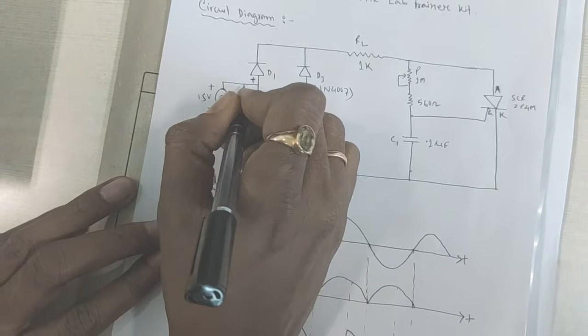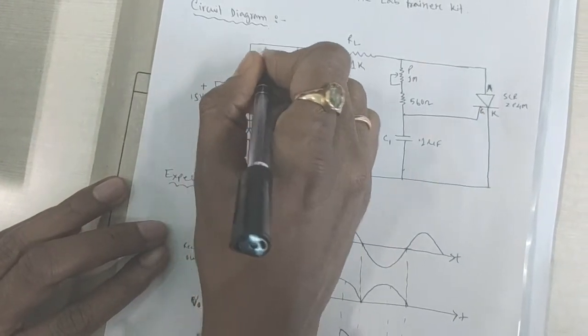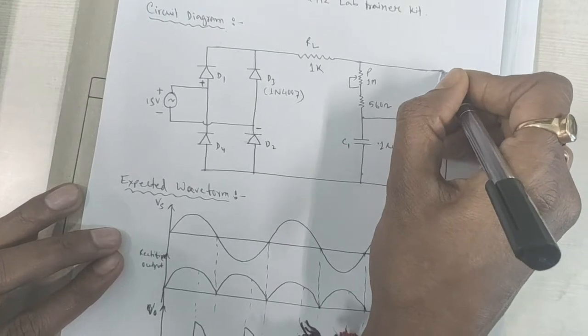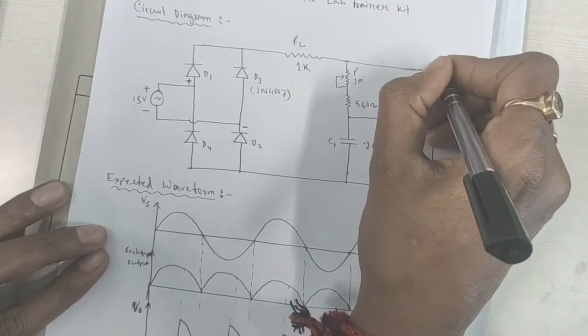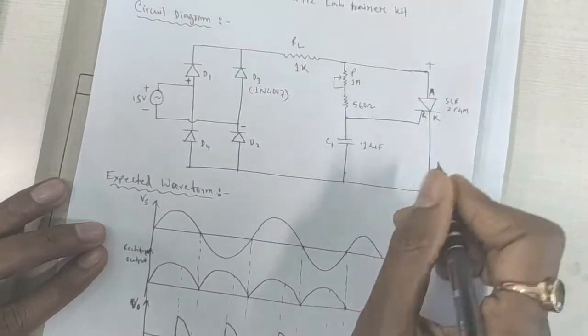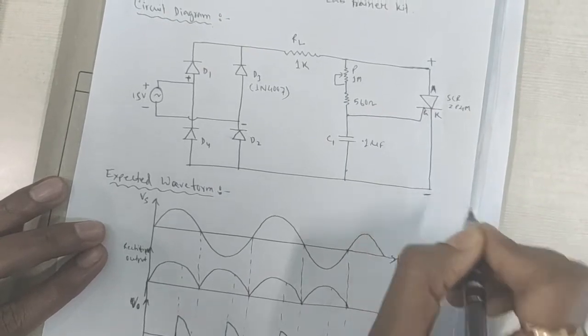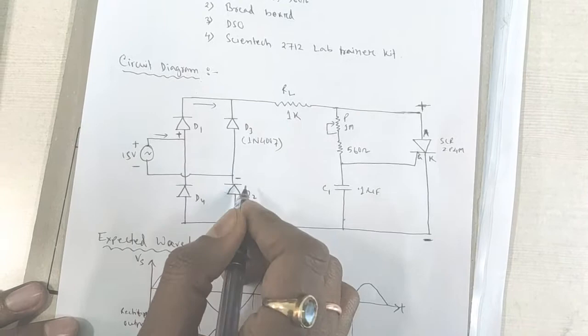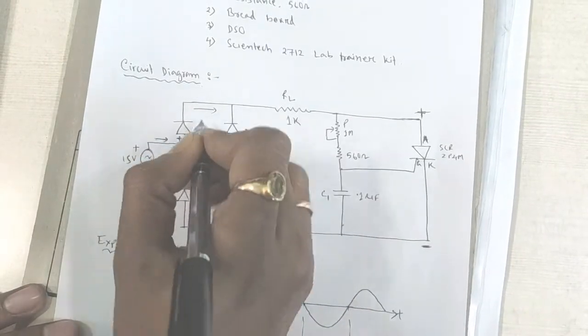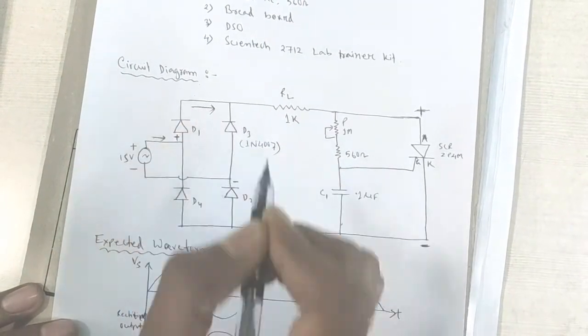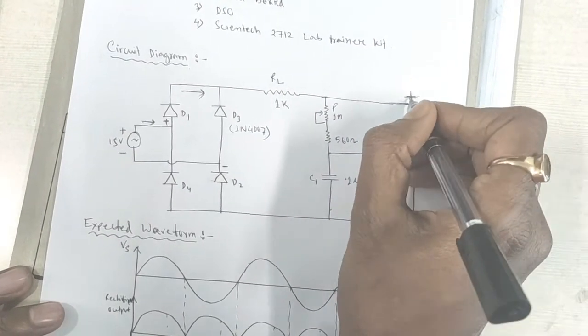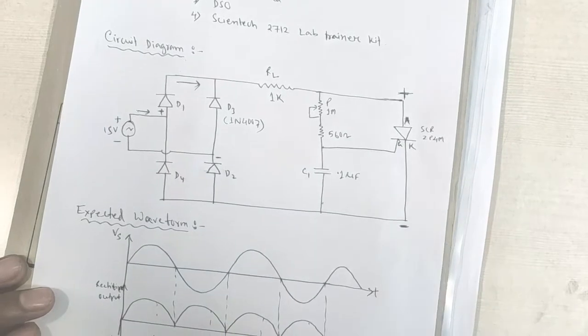Current will first flow through this D1, the load resistance, then here. Then positive will be appeared here and negative voltage will be appeared here. Due to the forward bias, current will flow through this path and also passes through this. And a positive voltage will be appeared at this point and negative voltage will appear at this point.